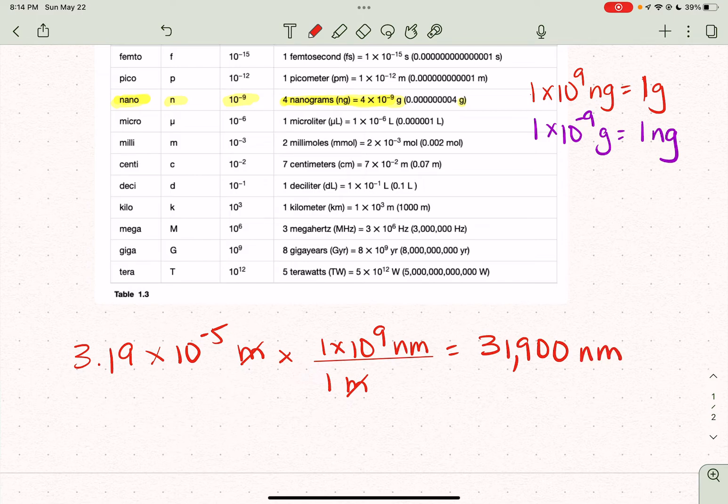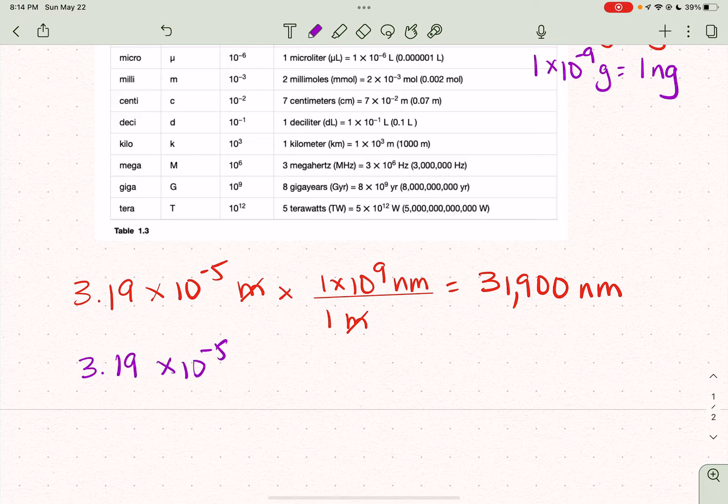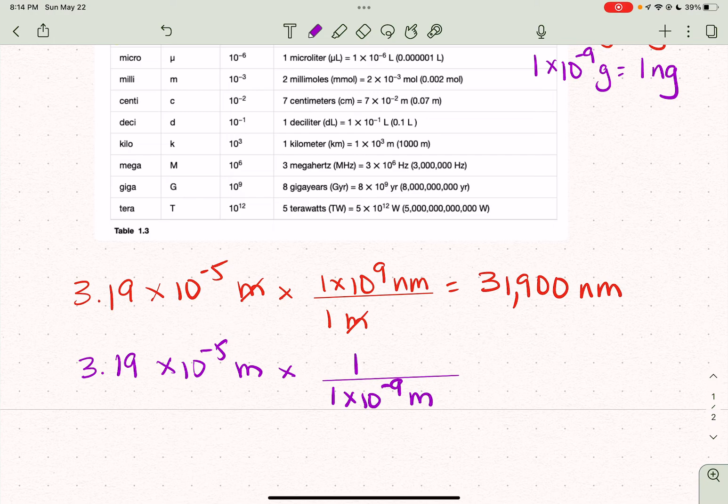So now let's do it using the purple conversion factor, just in case you aren't sure which one to use. So now this one is 3.19 times 10 to the minus 5 meters. This time, we're going to put our minus 9 there. So we're going to go 1 times 10 to the minus 9 meters equals 1 nanometer. And I still get 31,900 nanometers. My meters have canceled out once again.